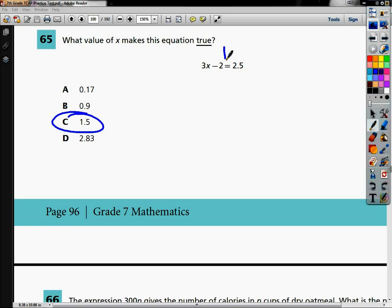Our statement says 3x minus 2 equals 2.5. This equal sign is important. What it means is if I can find a value for x here and multiply it times 3 and then subtract 2, it should be equal to 2.5 if it's the answer.